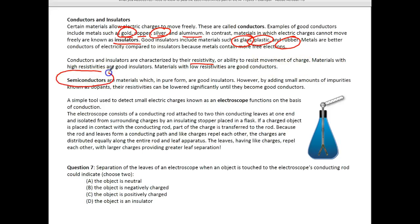Semiconductors, on the other hand, are materials which, when they're pure, are really good insulators. If I add a small amount of impurities, we call these dopants. So they're doped. They have resistivities that can be lowered until they become really good conductors. So semiconductors are like your computer chips, those type of things.